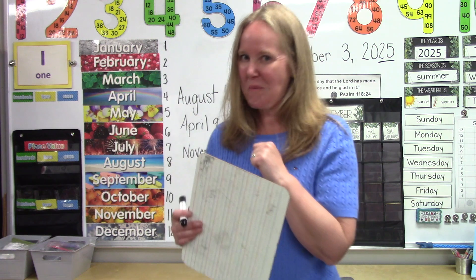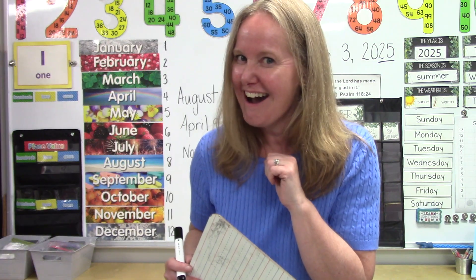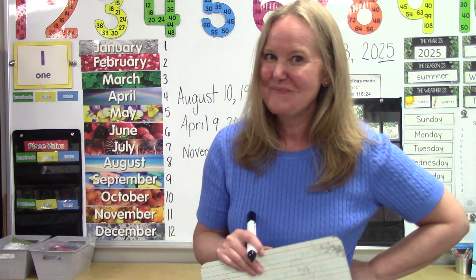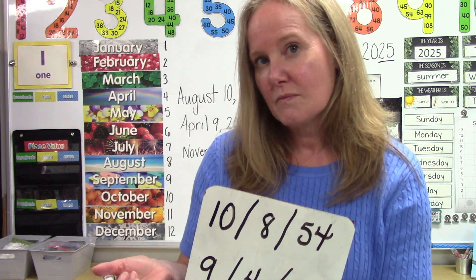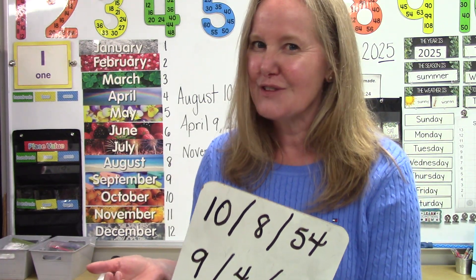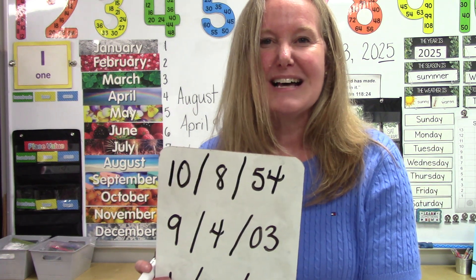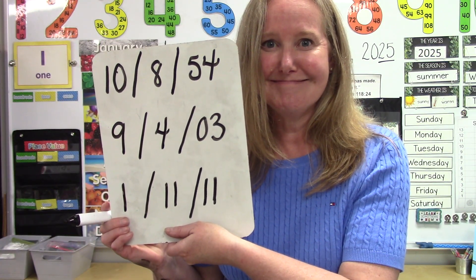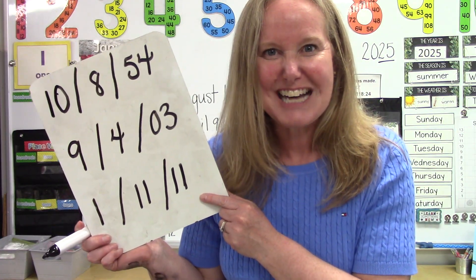Do you have yours written down? Did you notice that one of them is a little bit silly? The first one is 10-8-54. Even though it's 1954, we would still just write down the last two digits. Number two was 9-4-03. And the last one? 1-11-11 — it's just 1-1-1-1-1! I think it's fun when you can find dates that are like that.